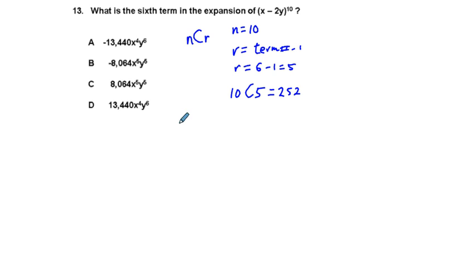So what we have, as far as the term itself goes, we're going to have 252. And we're going to have x to the what power? Well, you're starting at 10. So 10 is the first term, 9, 8, 7, 6, 5. So x to the fifth power.